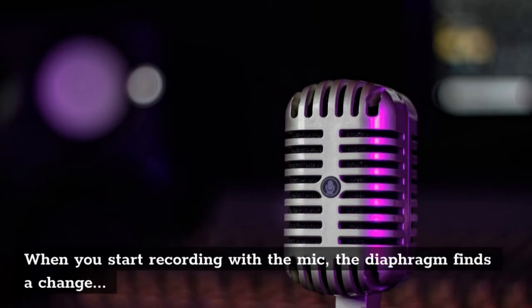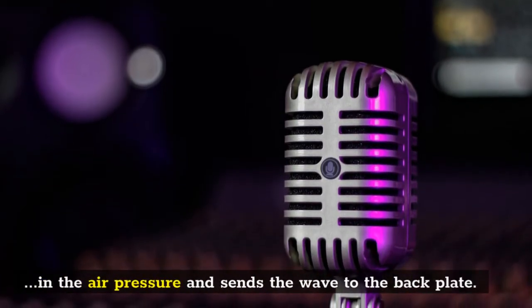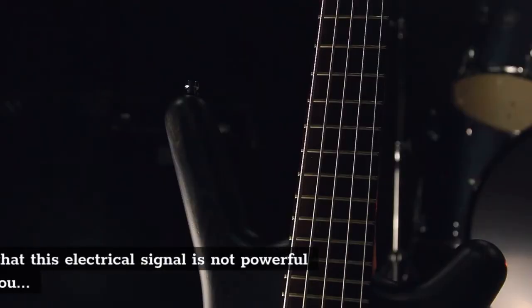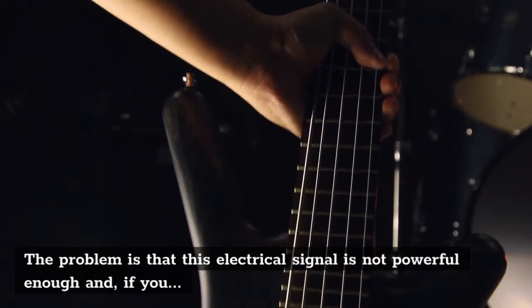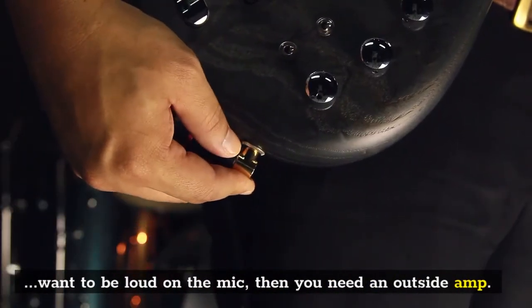When you start recording with the mic, the diaphragm finds a change in the air pressure and sends the wave to the back plate. The back plate sends it back to the diaphragm. The problem is that this electrical signal is not powerful enough, and if you want to be loud on the mic, then you need an outside amp.